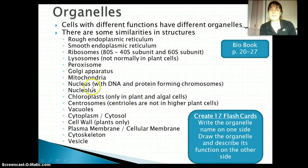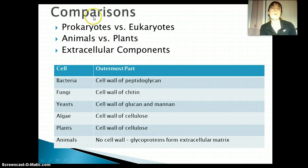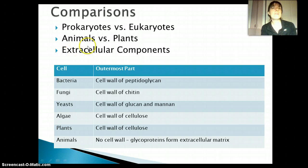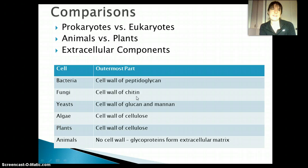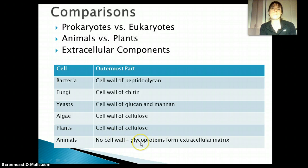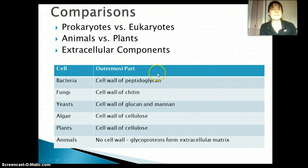We want to be able to compare prokaryotes and eukaryotes, and eventually animals and plants. You might also want to look at extracellular components — things on the outside of cells. In bacteria the cell wall is peptidoglycan; in fungi it's chitin, the same carbohydrate in insect shells; yeasts have cell walls made of glucan and mannan; algae and plants have cell walls of cellulose. Animals don't have a cell wall — we have glycoproteins on the outside of our cell membrane that allow cells to communicate with each other. Hopefully this gives you a view of both the diversity and the similarities of cells.